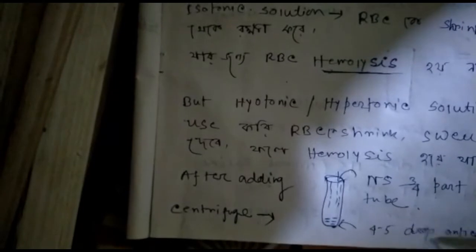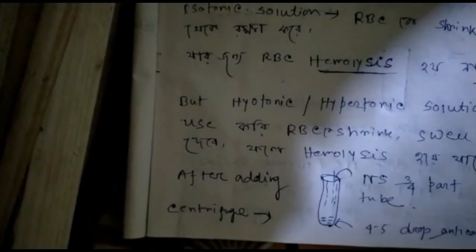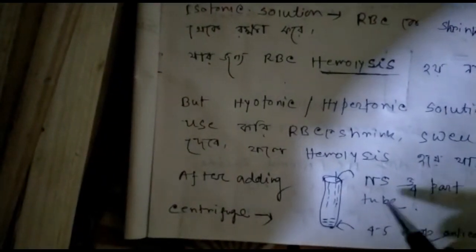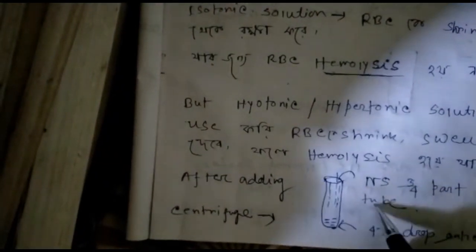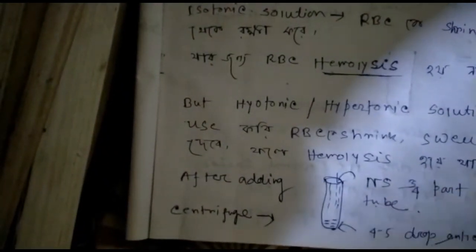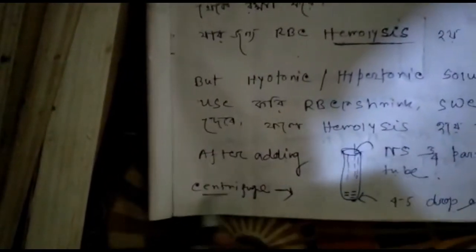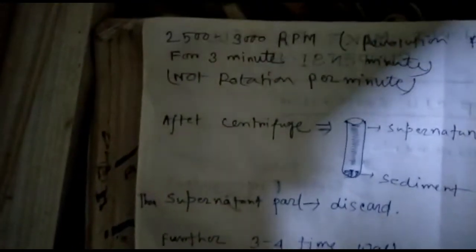To summarize the procedure: take four to five drops of anticoagulant blood and add three-quarters parts of normal saline in a test tube. Then this mixture is centrifuged. We use a centrifuge for this step.